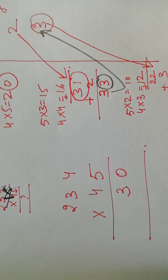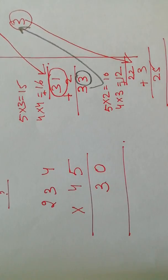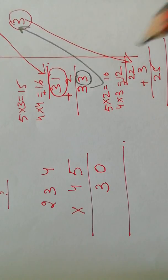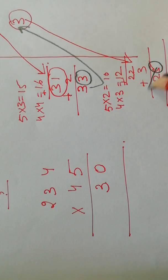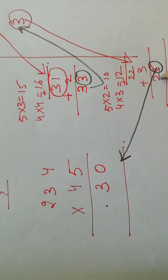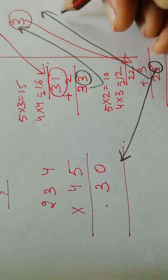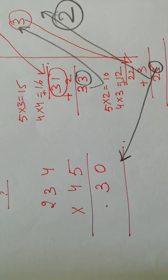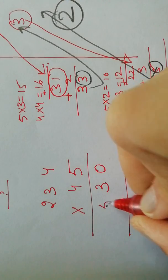To this 22 I'll be adding the carry, so I'll get 25 after adding. Now this 5 again will come here under this, and this 2 will go to the carry column. So I'll write 2 here and I'll write 5 here.